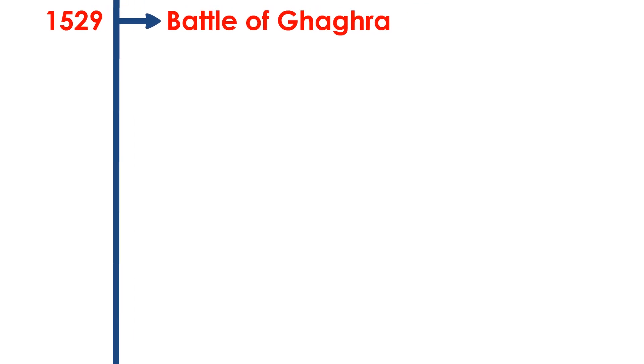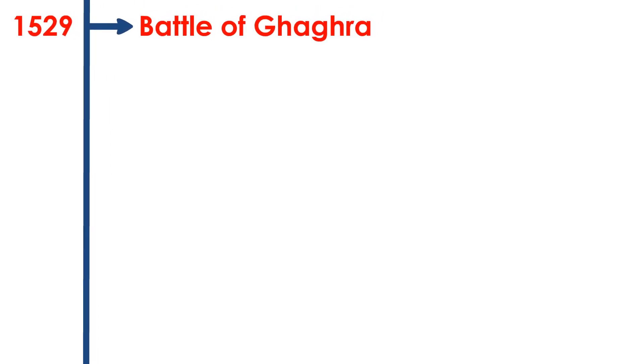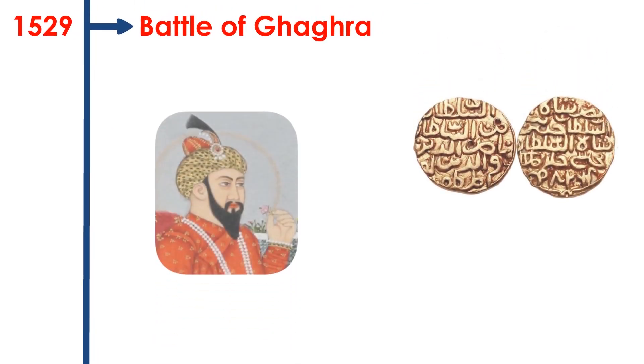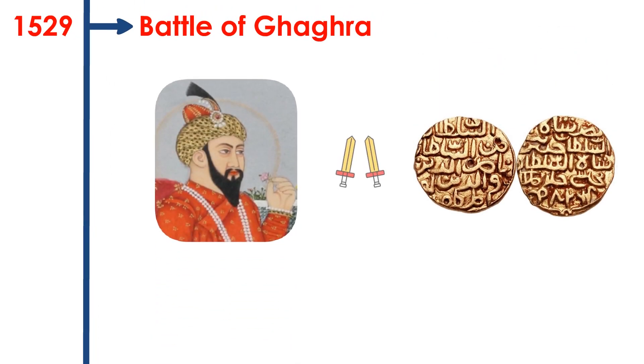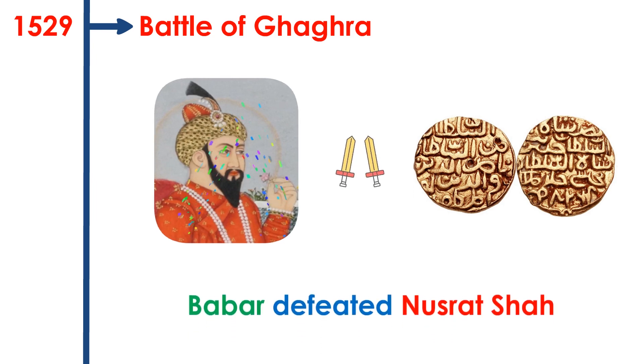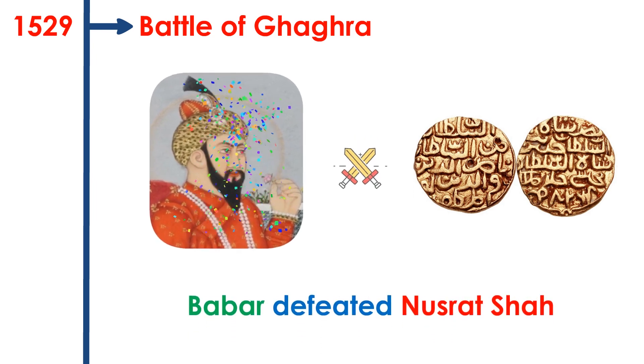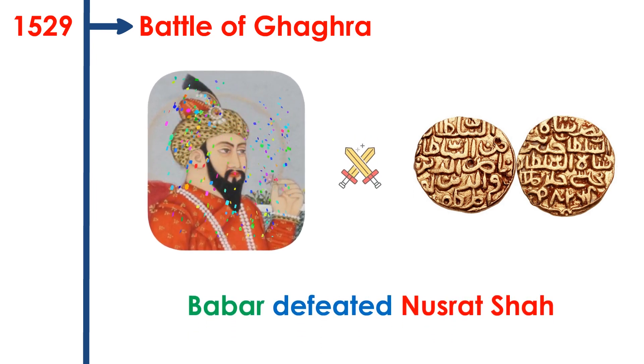First Battle of Ghagra. The battle was fought between Babar and Bengal Sultan Nusrat Shah, in which Babar defeated Nusrat Shah.